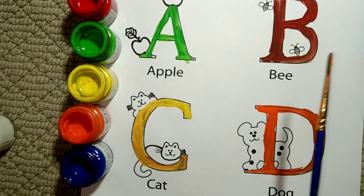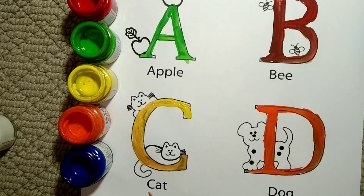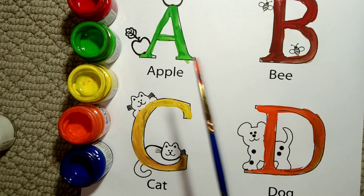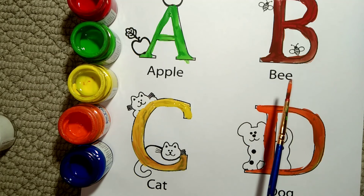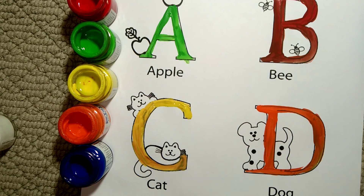B for bee, C for cat, D for dog. A for apple, B for bee, C for cat, D for dog.